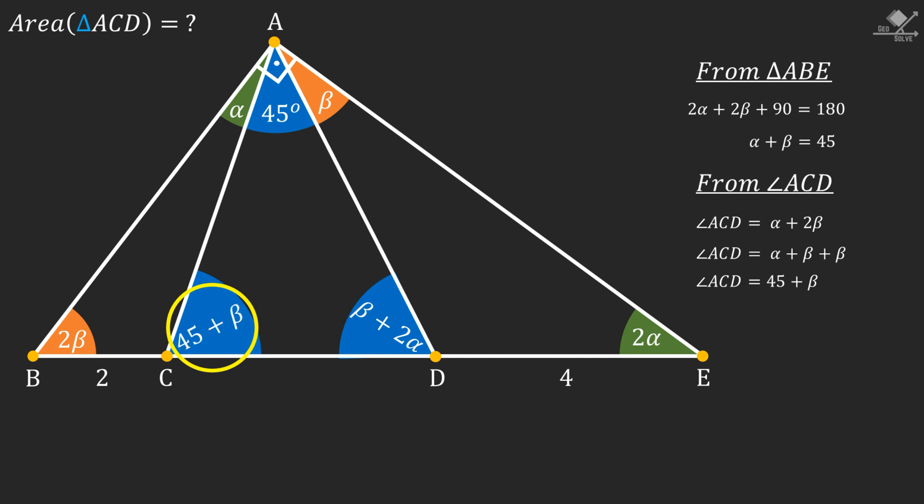Now let's focus on angle ADC which is β + 2α degrees. Let's write this angle as β + α + α. And instead of β + α we can write 45 degrees. Let's show that on the diagram also.